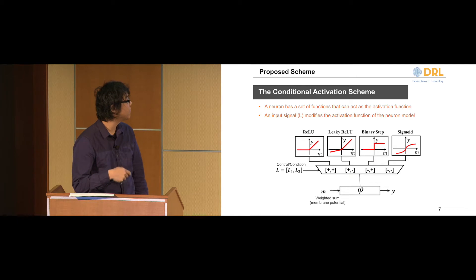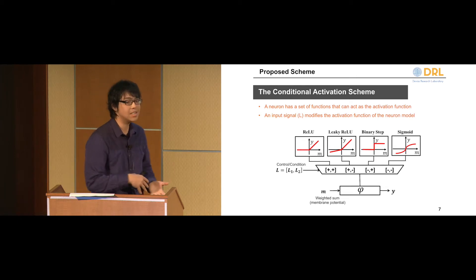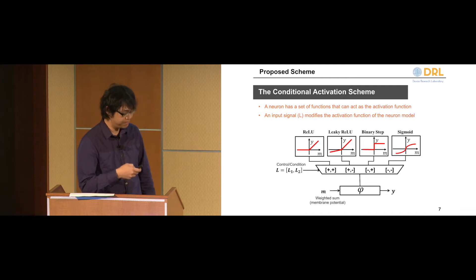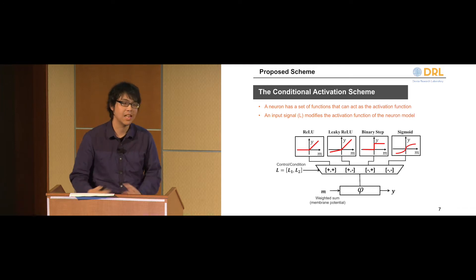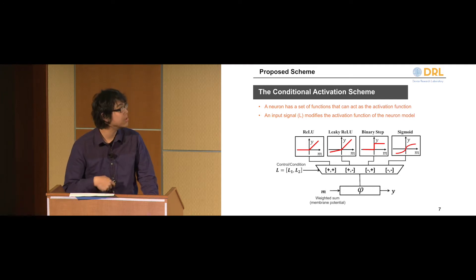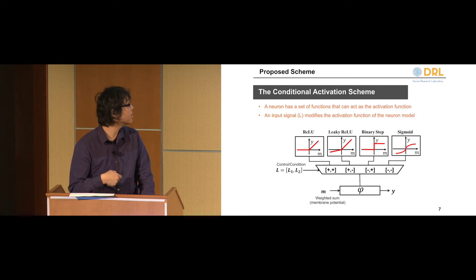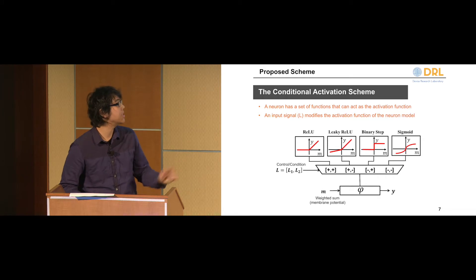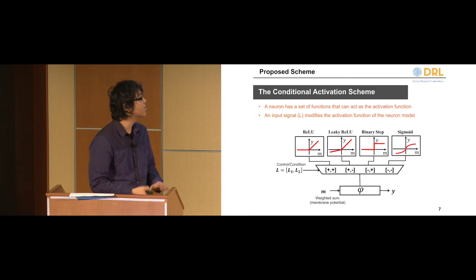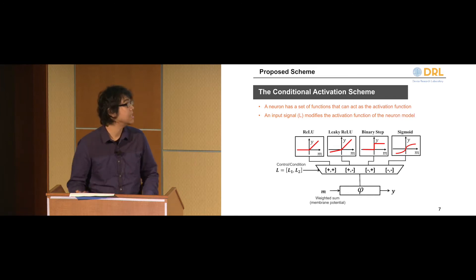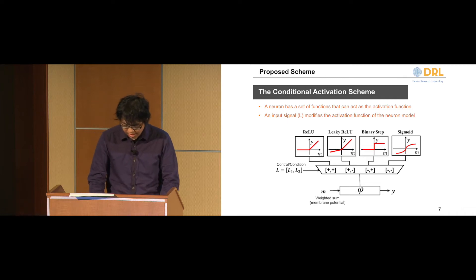In this scheme, the bottom part is basically the conventional neuron where you have the weighted sum or membrane potential pass through the activation to generate the output. But on the top, you have this condition, where dynamically, one of these different activation functions is selected based on the condition. For example, in this graph, the control L consists of two channels, L1 and L2. When both channels are activated, the response is a ReLU. When one is activated, you get the leaky ReLU or the binary step. When none of these control channels are activated, it's basically a sigmoid function. This is what we propose as the conditional activation scheme.